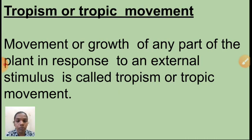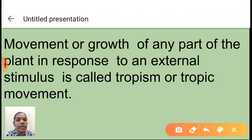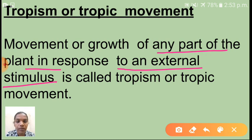Tropism or trophic movement — what is meant by tropism? Movement or growth of any part of the plant in response to an external stimulus is called tropism or trophic movement. That external stimulus may be sunlight, water, other chemicals, or gravitational force. That kind of movement is called trophic movement.